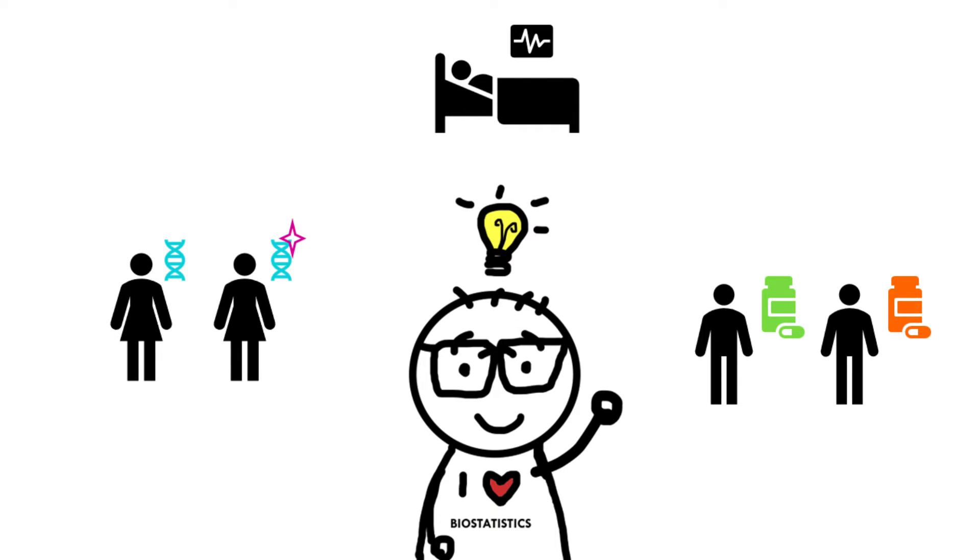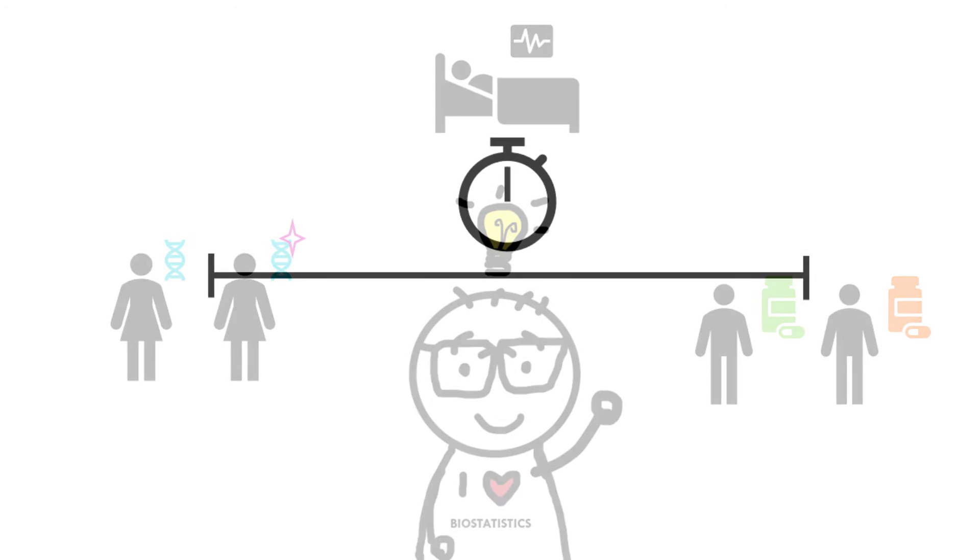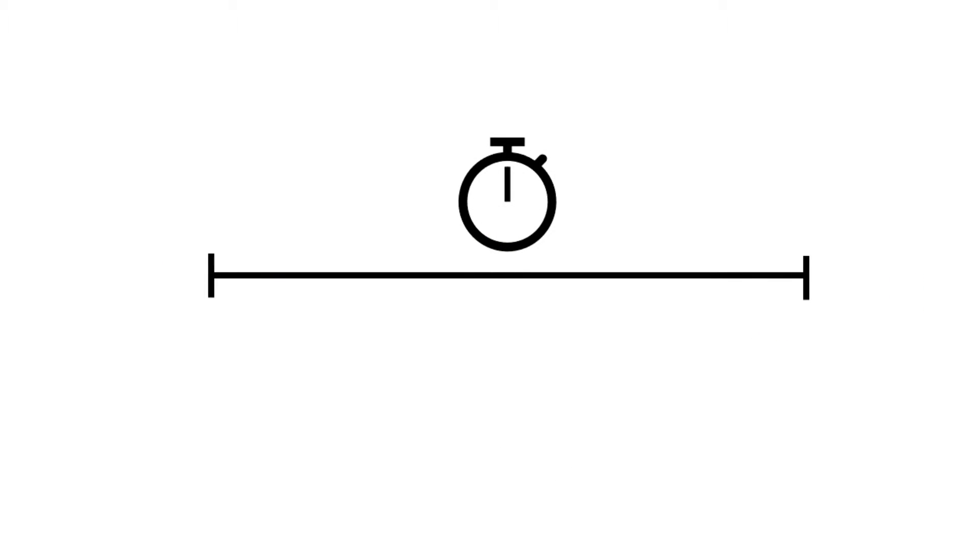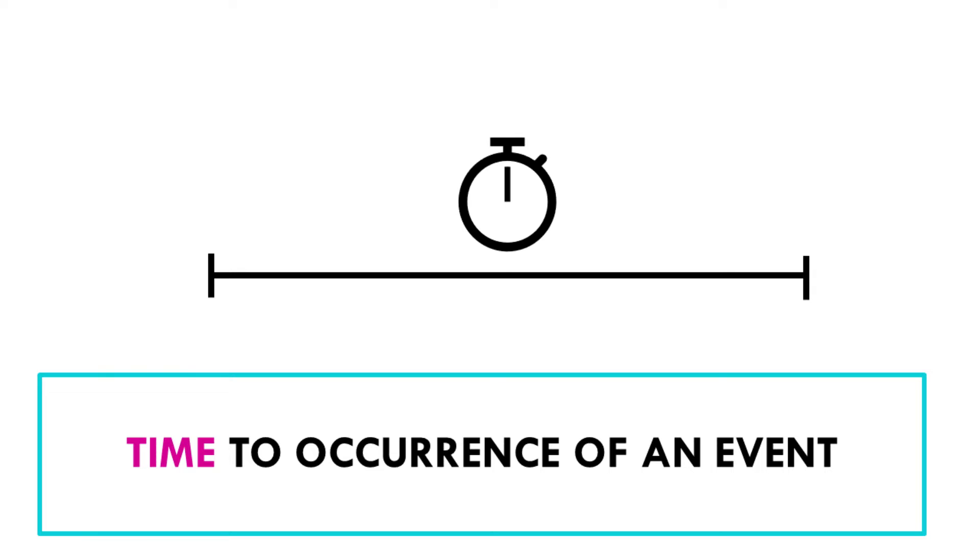So survival time analysis or time to event analysis is just a group of statistical methods that we use to investigate the time it takes for an event of interest to occur. In other words, the variable we study is the time until an event occurs. So what is this event?